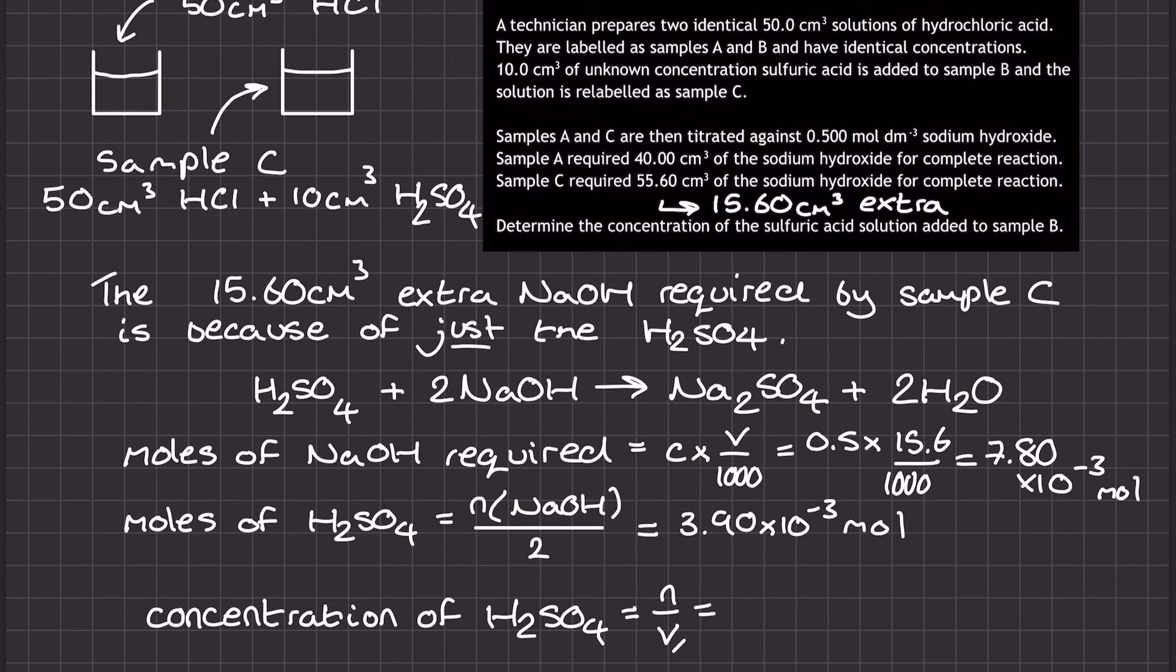Final step here seems straightforward, but there is a chance here to make a mistake. You are asked to determine the concentration of the sulfuric acid solution added to sample B. So what I need to do here is moles over volume to find concentration as normal, but just make sure you use the volume of the original sulfuric acid solution that was added to sample B to create sample C. Don't use that total volume of sample C. My final answer here to three significant figures is 0.390 moles per decimetre cubed.